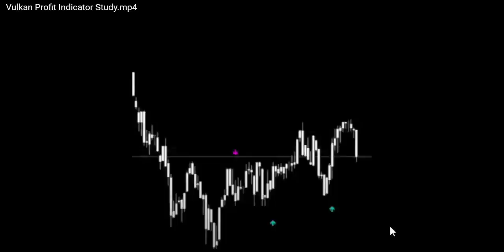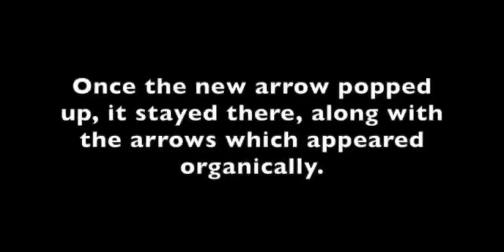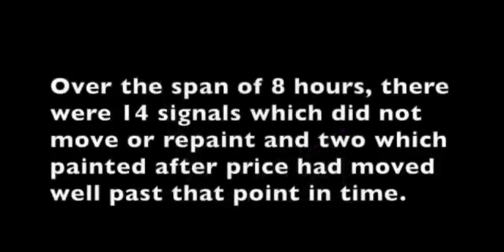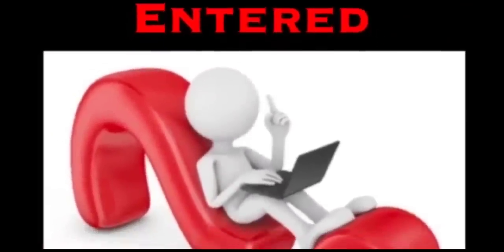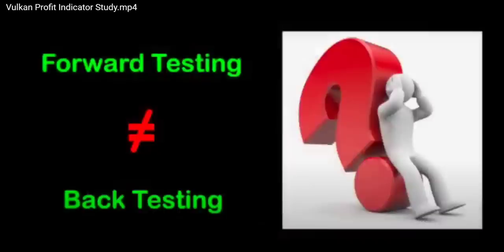I'll let Dan run this out so you can see the rest. Once the new arrow popped up, it stayed there along with the arrows which appeared organically. The organic ones are what you want to pay attention to because those are your actual signals. Over the span of eight hours, there were 14 signals which did not move or repaint and two which painted after price had moved well past that point in time. So what does this tell us? It tells us that had you used this indicator, you could have entered and exited a trade long before the false arrows popped up — and even if those arrows did pop up while you were still in the middle of a trade, it wouldn't matter. It's the organic signals you're actually concerned with.